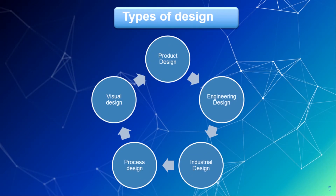Now, what are the different types of design? Types of design include product design, engineering design, industrial design, process design, and visual design. Among all these, there is very little difference. Engineering design is concerned with the design, development, and analysis of some device or systems, which is designed for basic functionality.